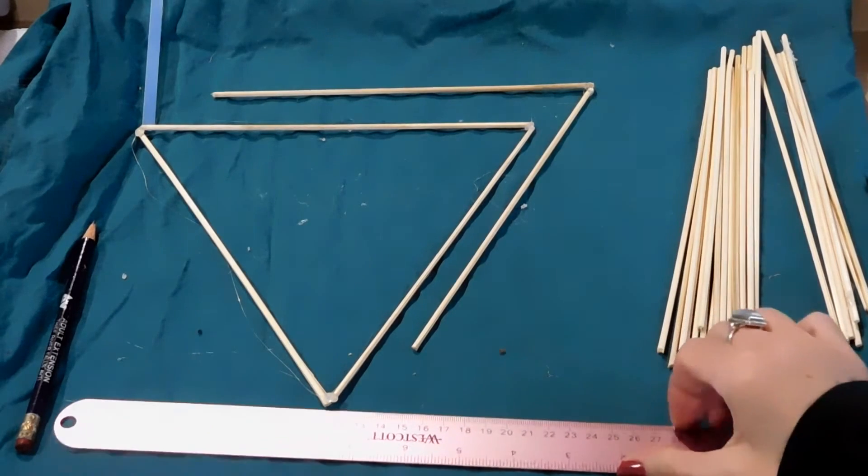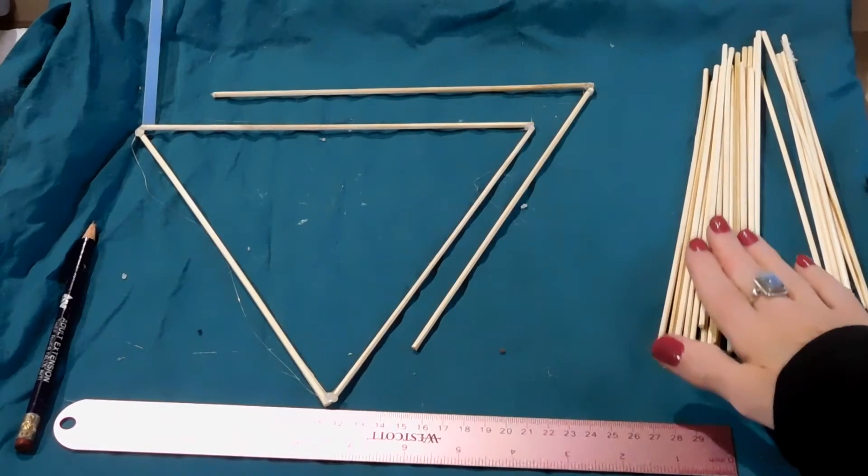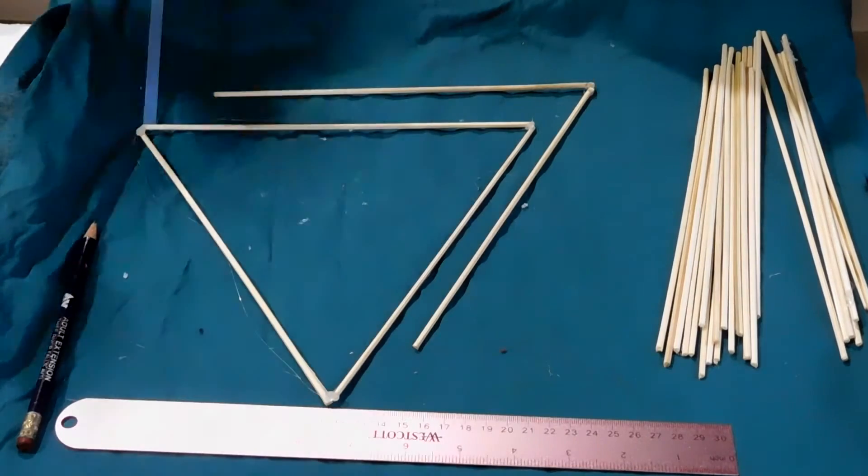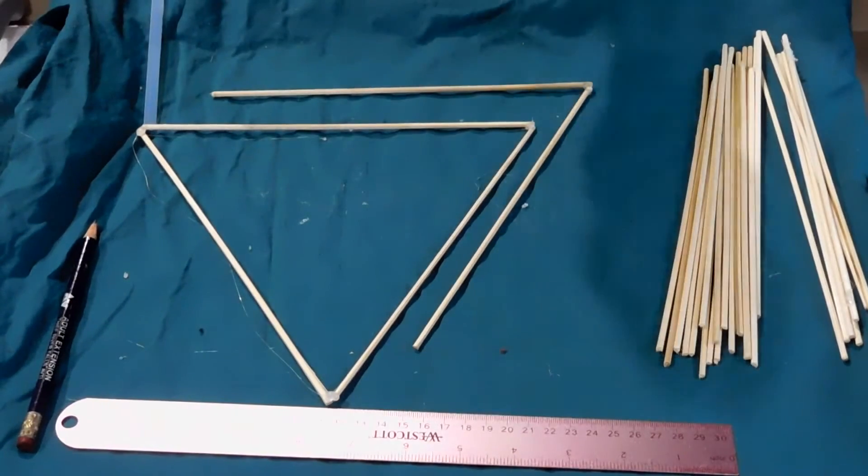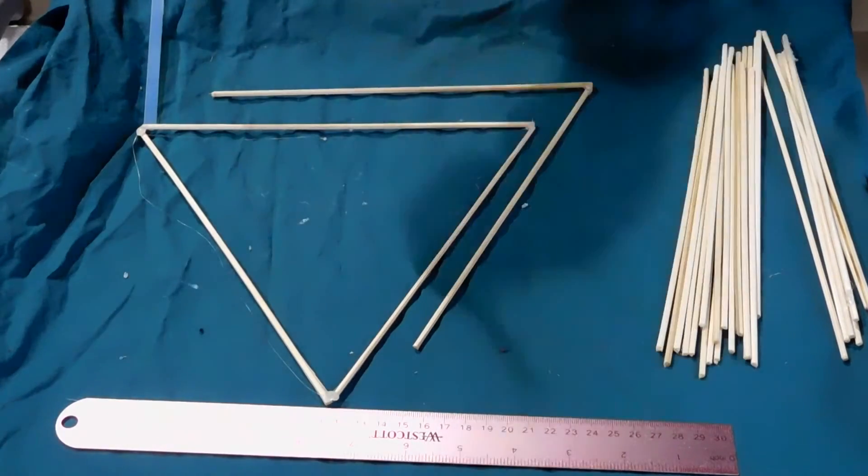So we are going to use a ruler, some bamboo skewers. We'll also need a quick drying glue. I've got a glue gun. If you have a different form of quick drying glue, that might be better. The glue gun gets a little messy, and I've got a pencil.